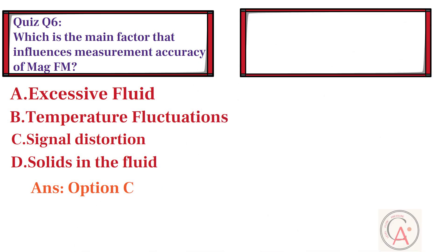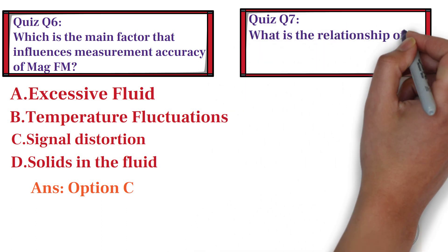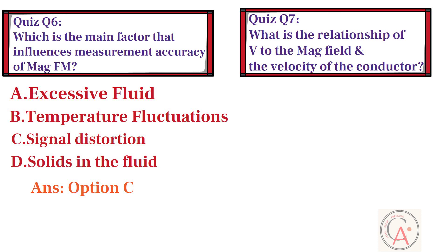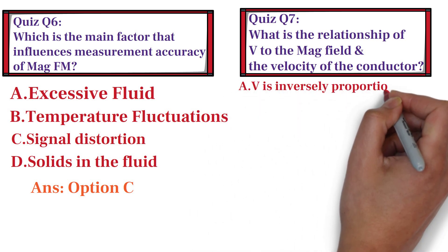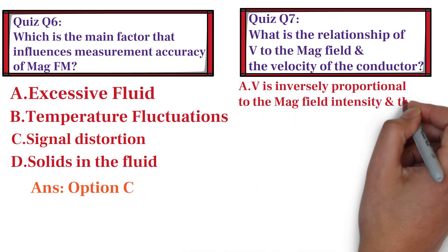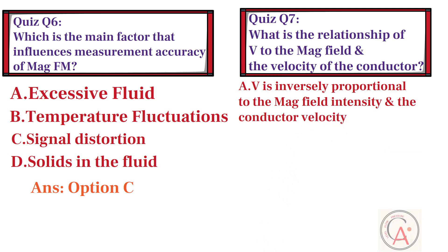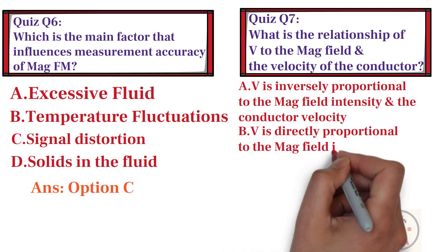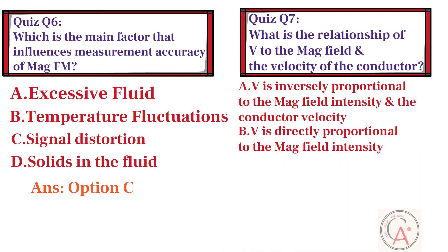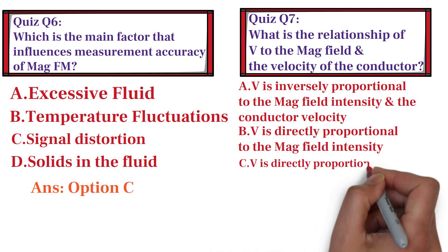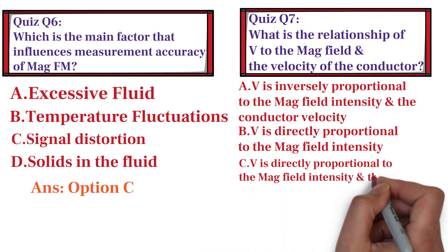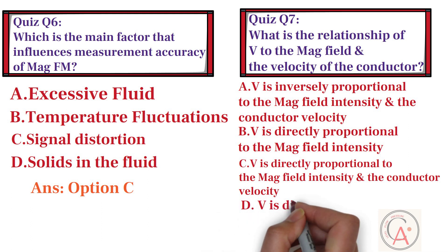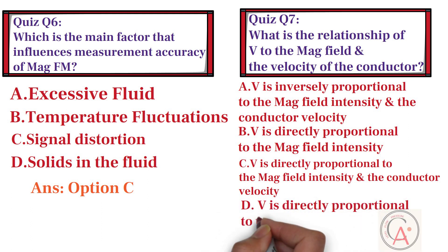The last question is: what is the relationship of voltage to the magnetic field and the velocity of the conductor? Option A: voltage is inversely proportional to the magnetic field intensity and the conductor velocity. Option B: voltage is directly proportional to the magnetic field intensity only. Option C: voltage is directly proportional to the magnetic field intensity and the conductor velocity. And option D: voltage is directly proportional to the conductor velocity only.